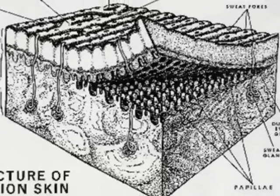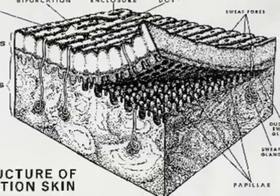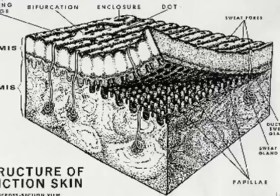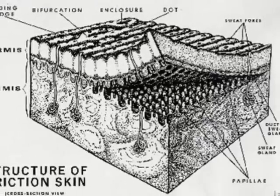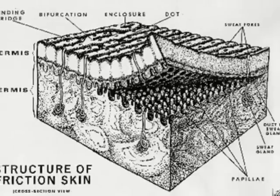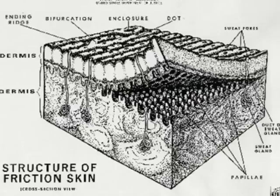Pores form a single ridge by uniting and connecting together. They serve to assist in gripping and handling items. Fingerprints are composed of 98.5 percent water and 1.5 percent other substances, such as amino acids and salts. This other category is responsible for the latent prints due to sweat produced by the pores.